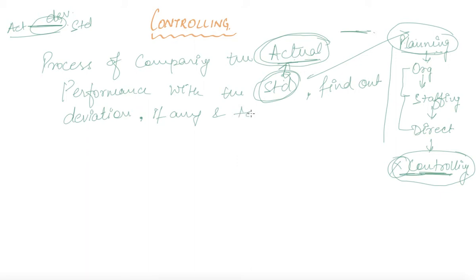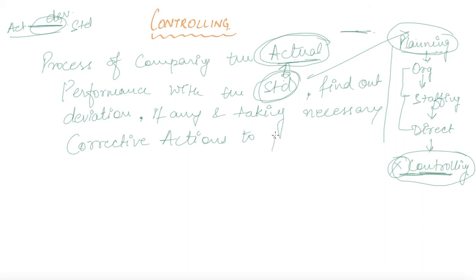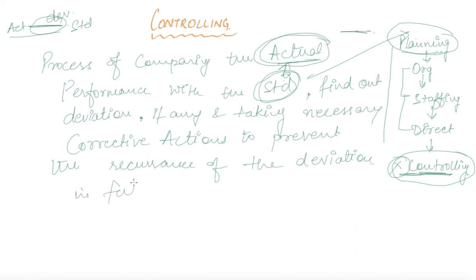After finding the deviation, corrective actions are required to prevent the reoccurrence of these deviations. In future, it is obvious that if you have started functioning toward something, it is not just a single objective you want to achieve — after achieving one objective, you will start with a new objective.